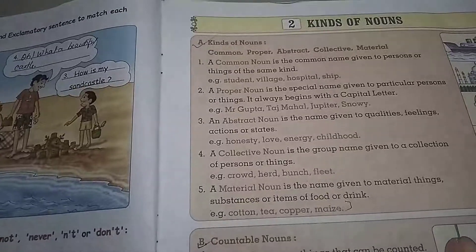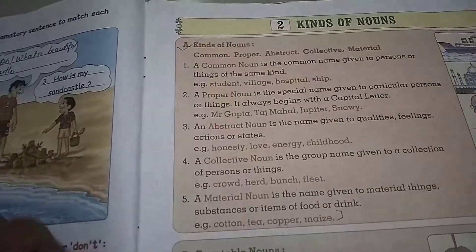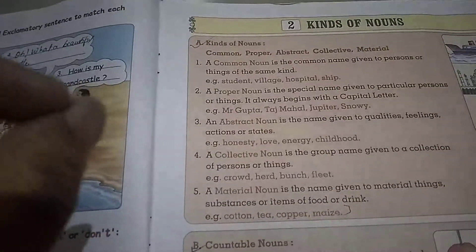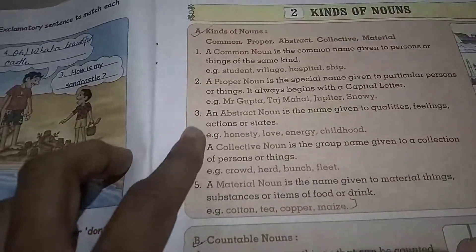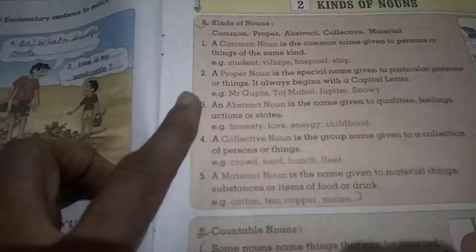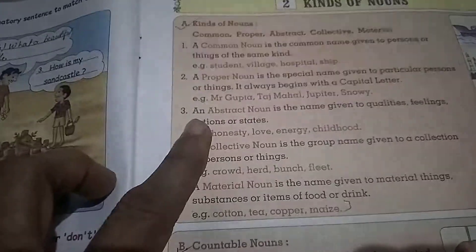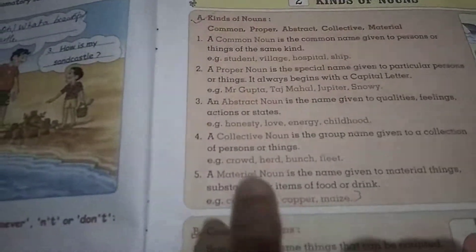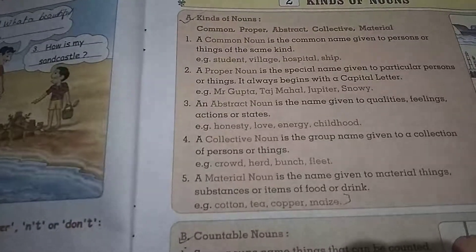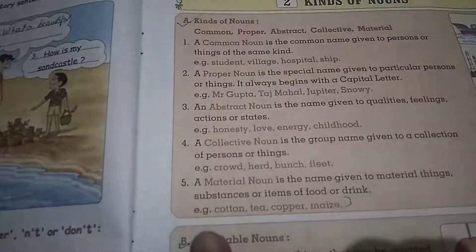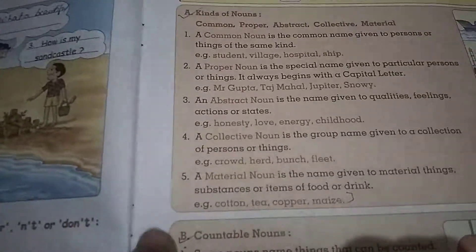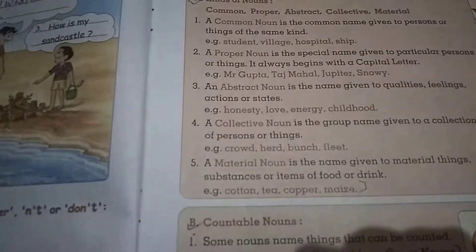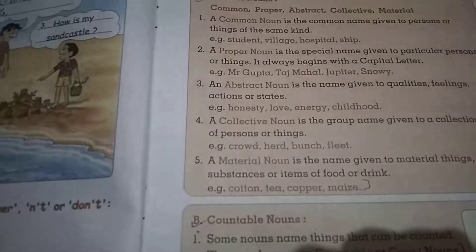So what you learned today is kinds of nouns — there are five kinds of nouns: Common Noun, Proper Noun, Abstract Noun, Collective Noun and Material Noun. We also came to know the examples given for each. Common Noun means the common name given to a person — that is student, village, teacher, hospital, doctor, ship. Proper Noun is a name given to a person or thing and it starts with a capital letter — you should always remember the Proper Noun starts with a capital letter, even when it comes in a sentence, the first letter will be in capital.